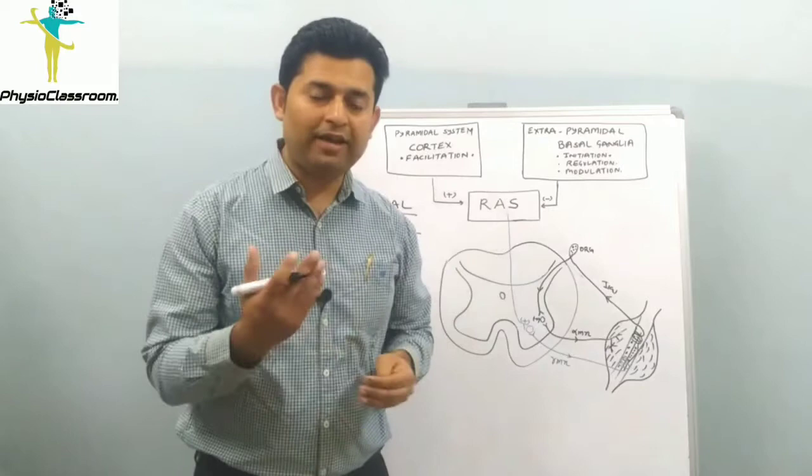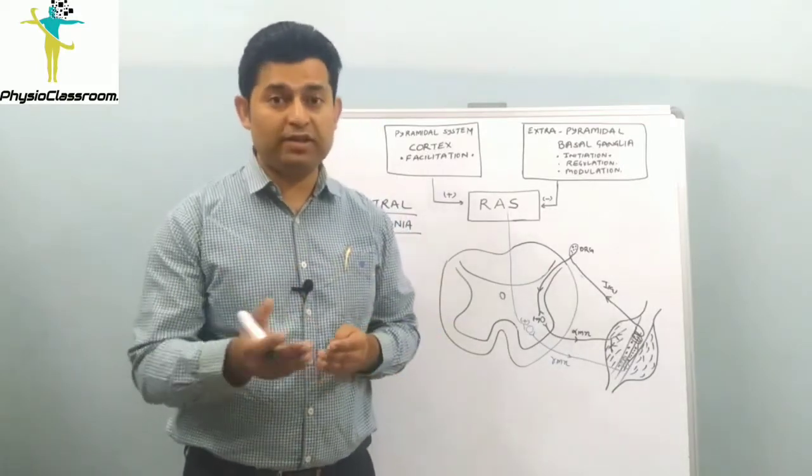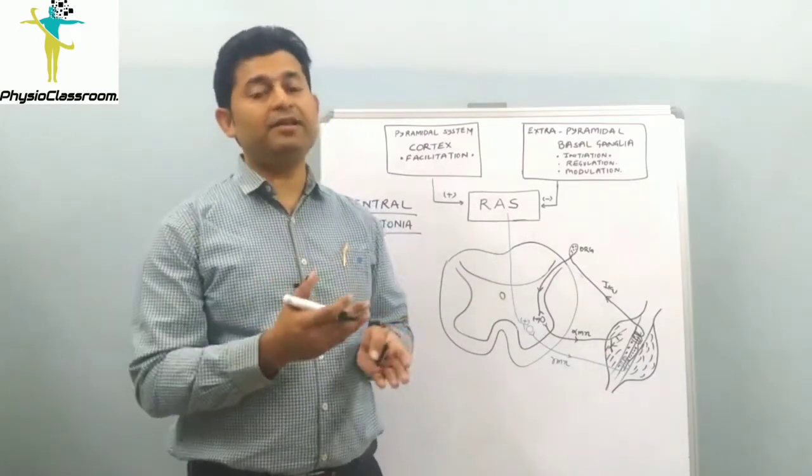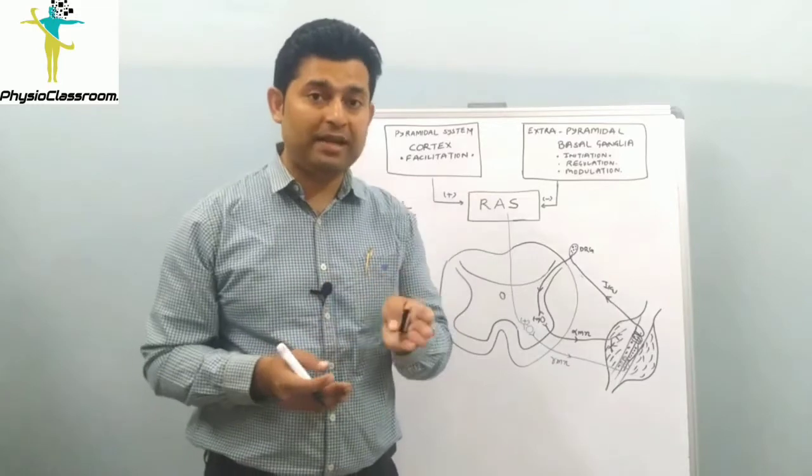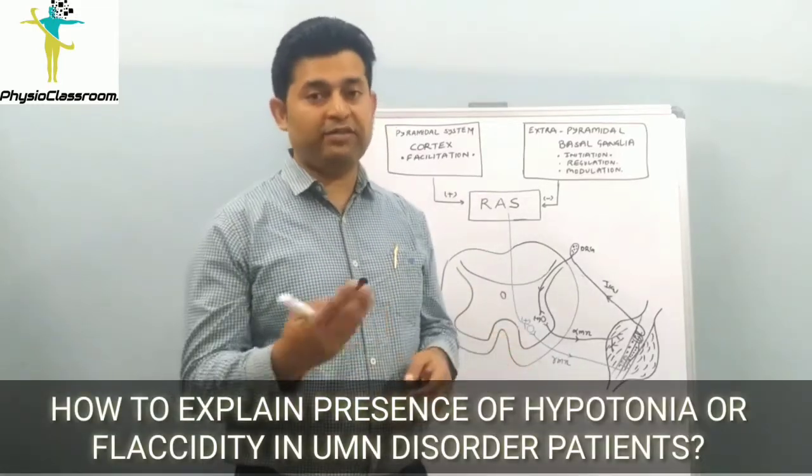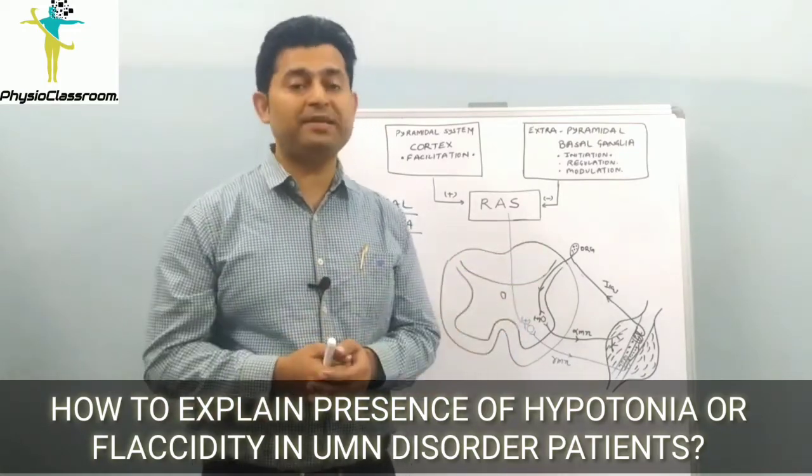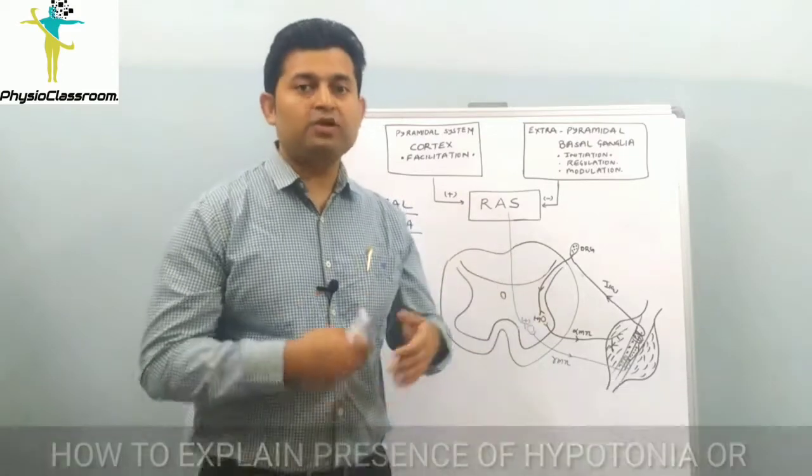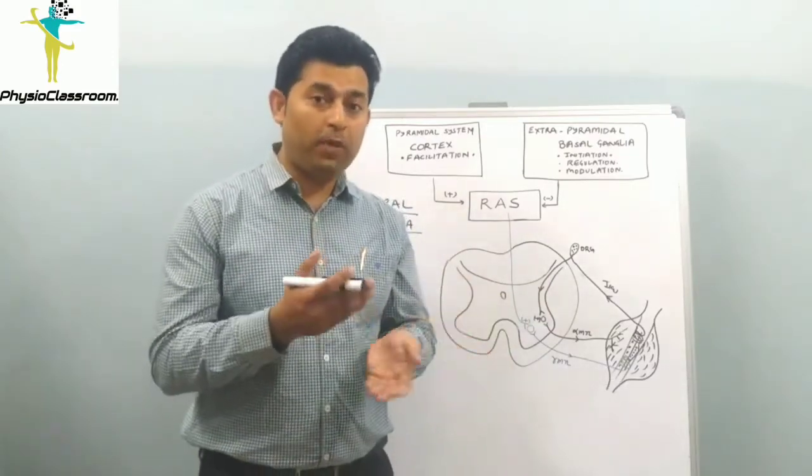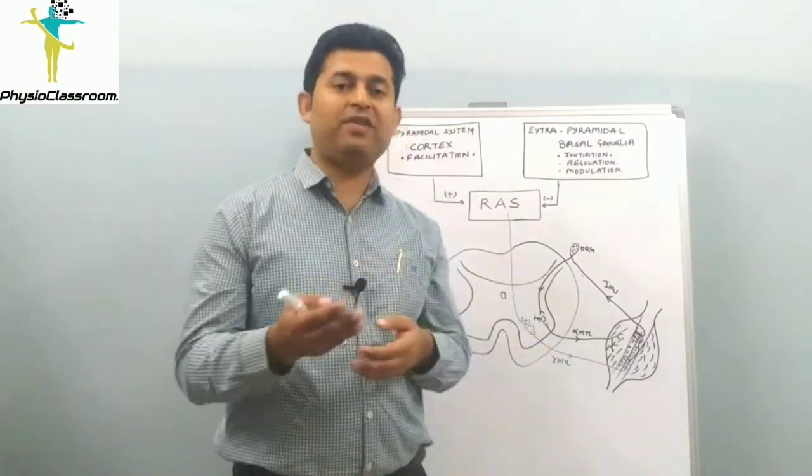Sometimes in clinical practice, we come across cases where although it is an upper motor neuron type, there is persistent hypotonia present in those patients. Even during follow-ups after three months, six months, or one year, there is still hypotonia. How can we explain persistent hypotonia in a patient with UMN disorder?